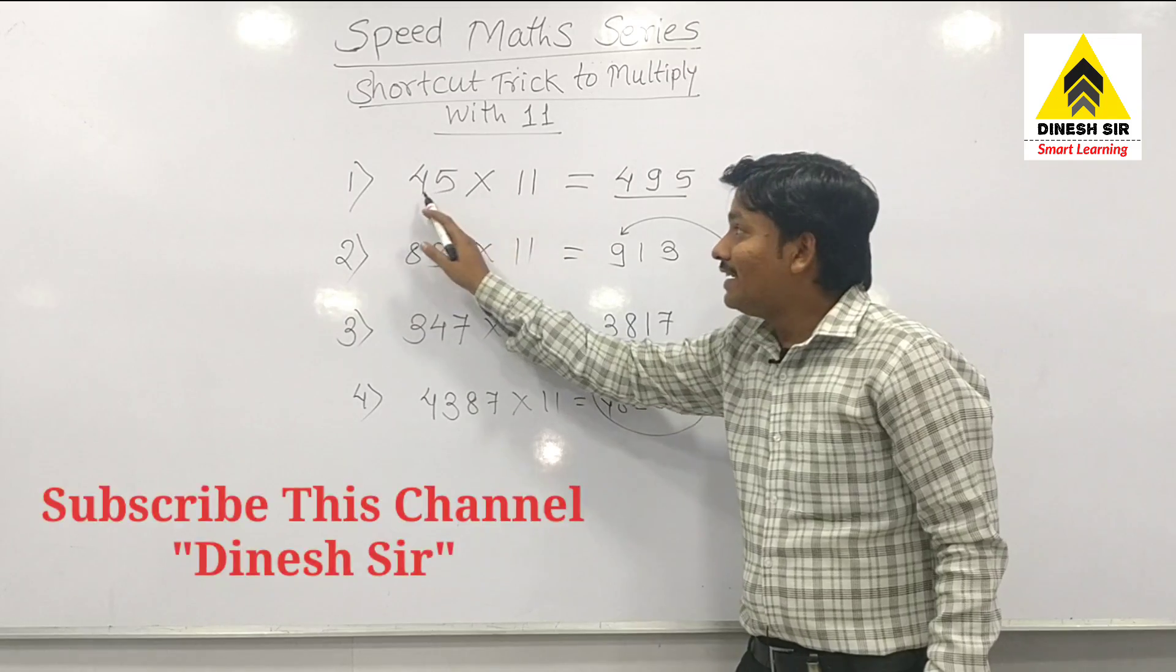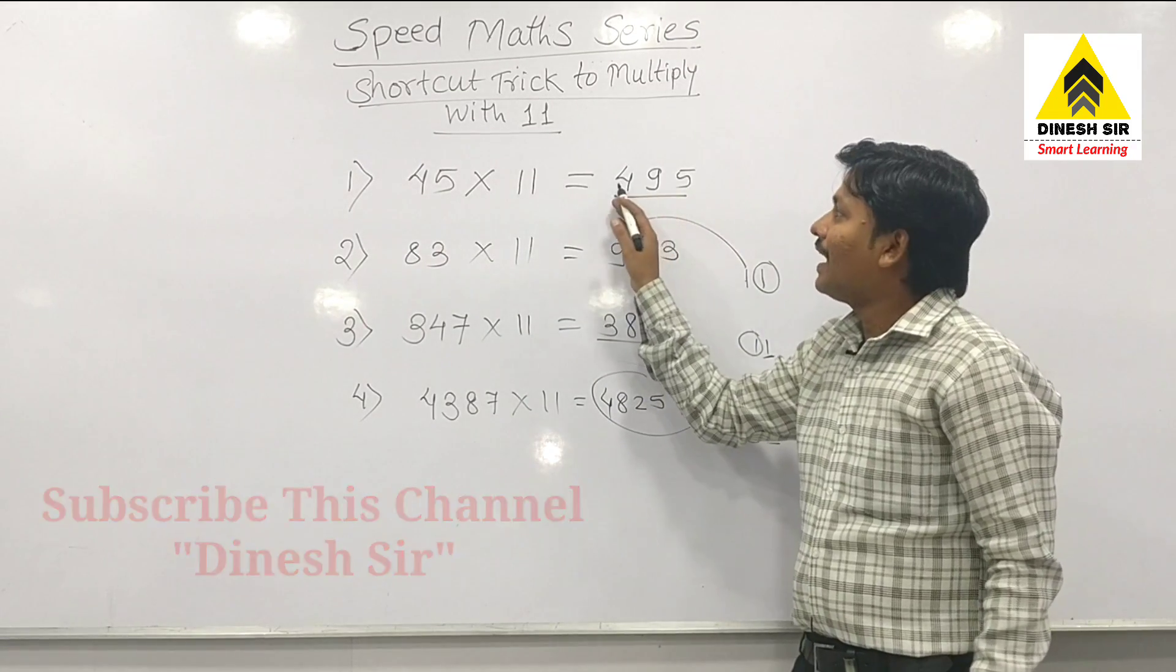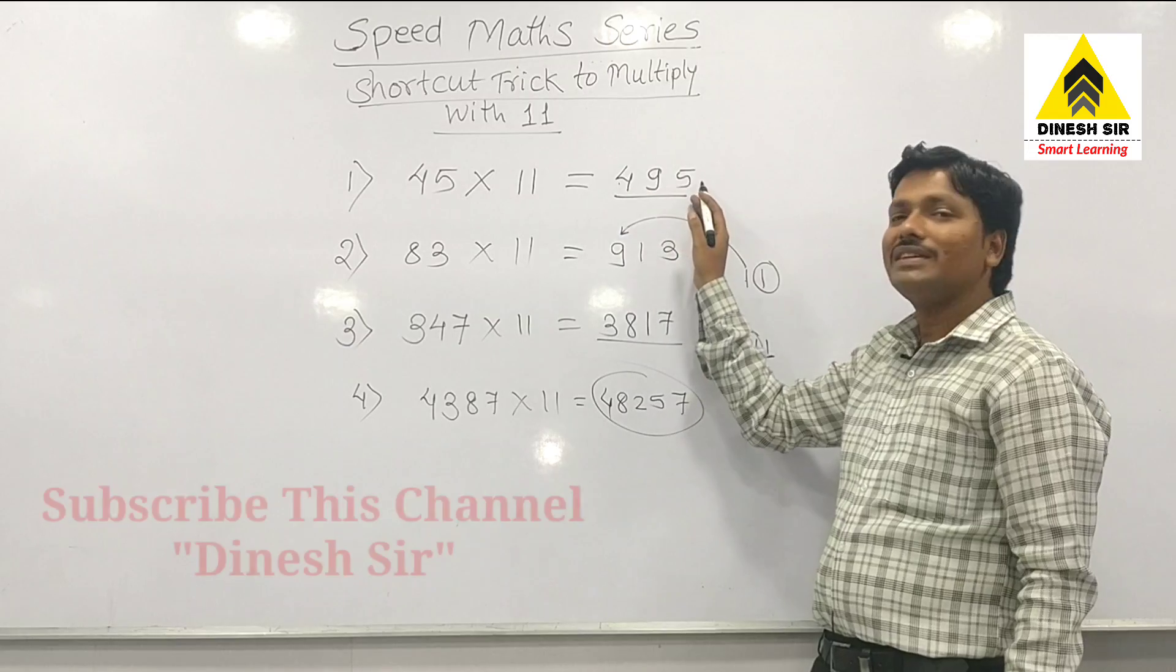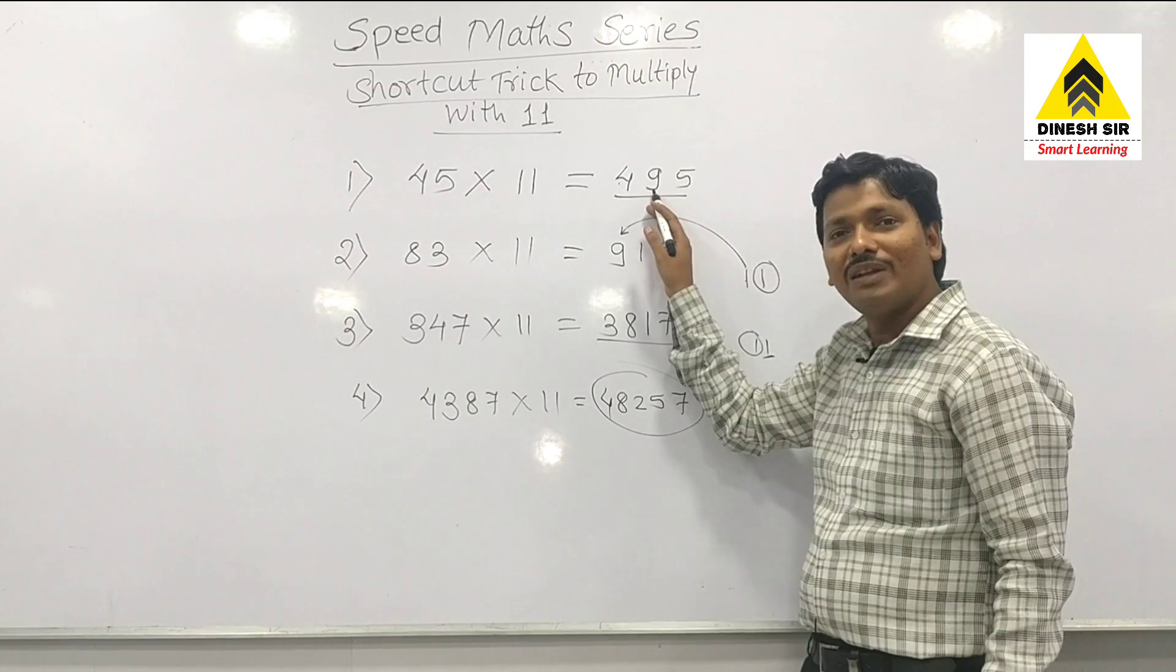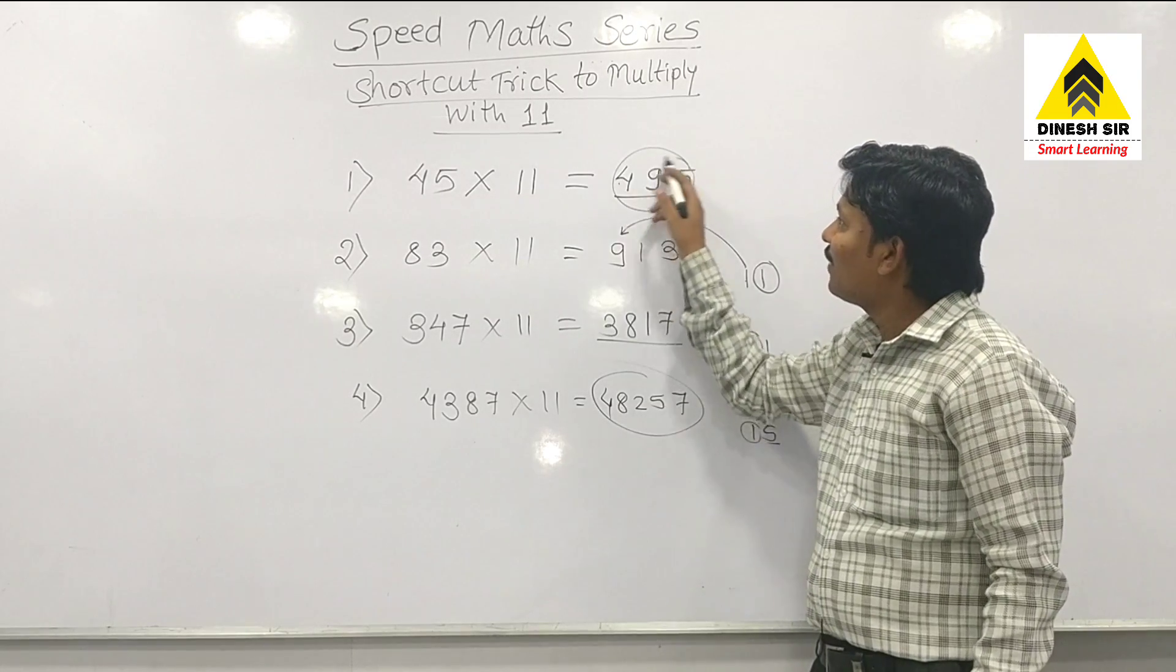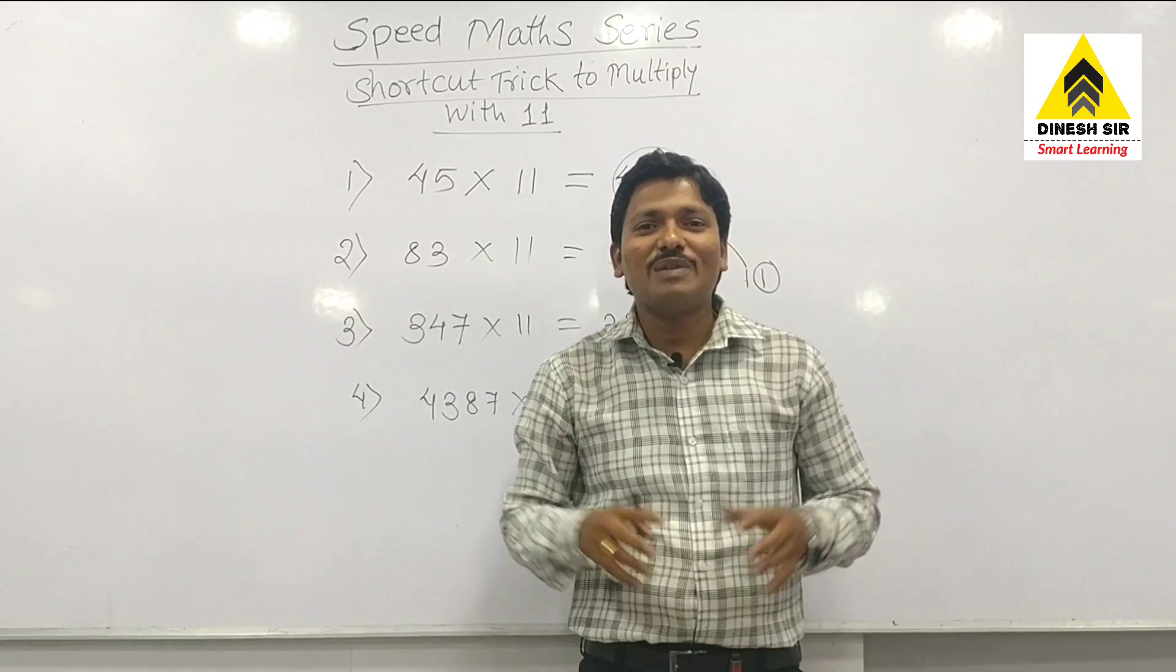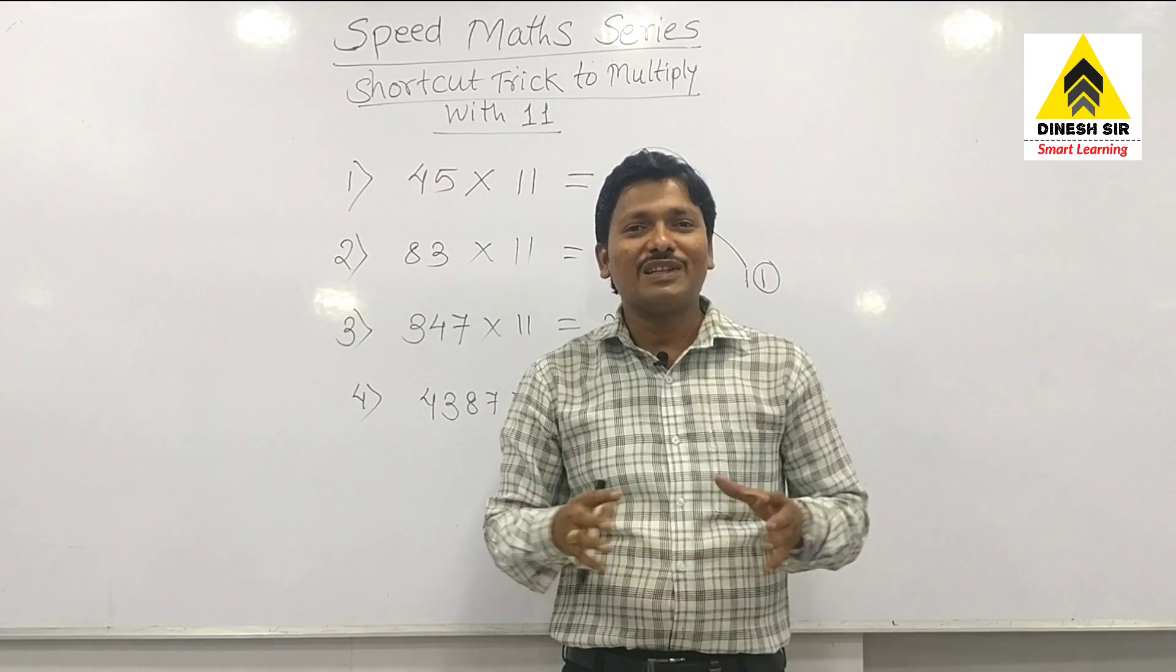Once again, if you have a two-digit number and you are multiplying with 11, write these two digits with a gap. Add first and last digit, and the sum will be the middle number, and you will get the final answer. So this way you can multiply with 11 to any number.